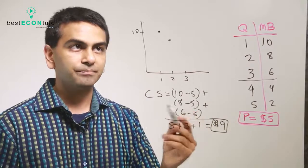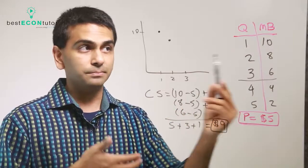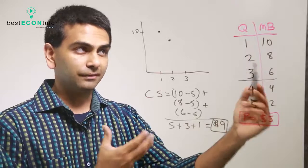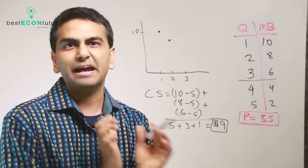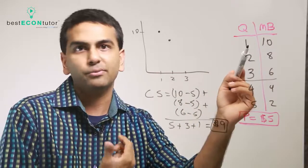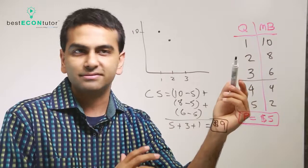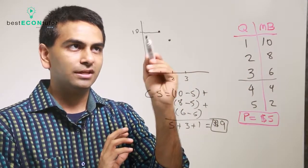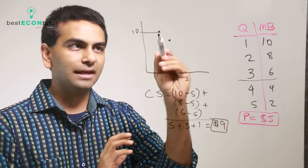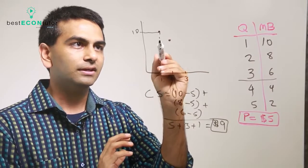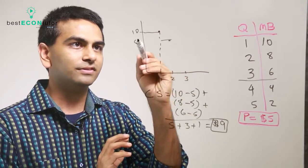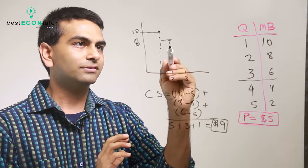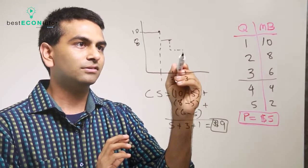Here's how your book will probably present it. Since you can't buy a fraction of a good, your marginal benefit schedule assumes $10 for the first good, $8 for the second, and so on. They draw a horizontal line for each, making a step function, then $6 for the next one and so on.